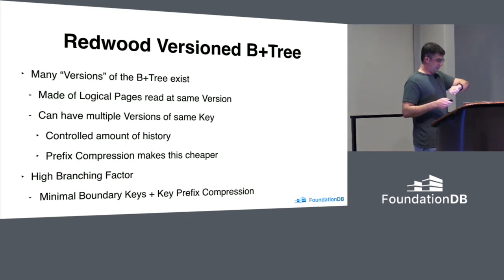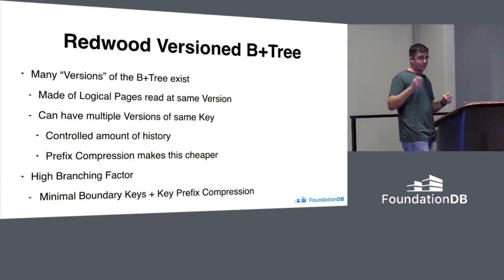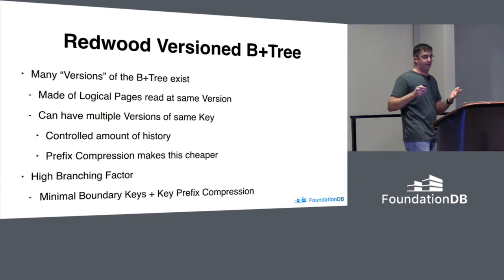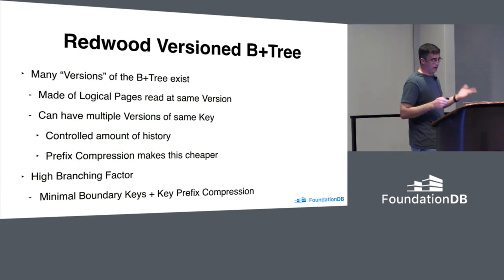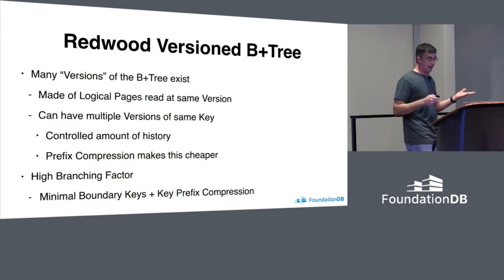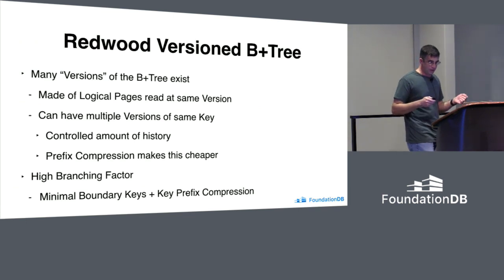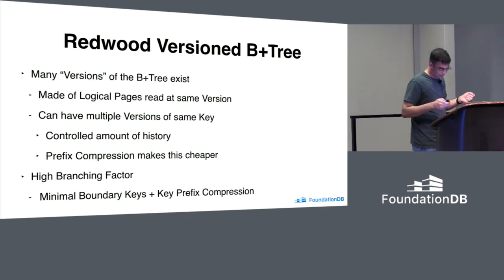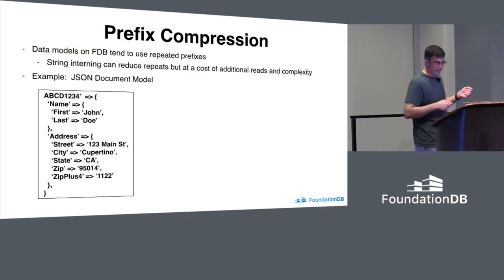Another property of Redwood is a high branching factor, which comes as a result of using minimal boundary keys and having key prefix compression.